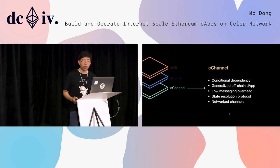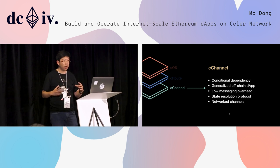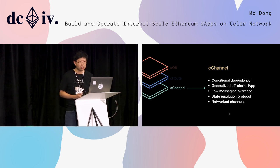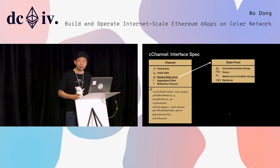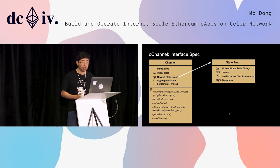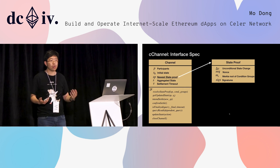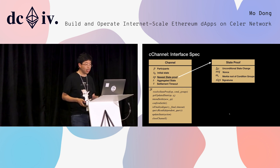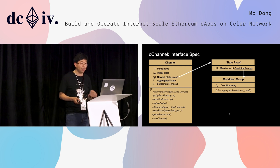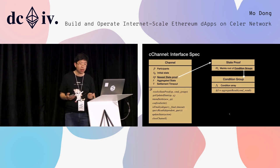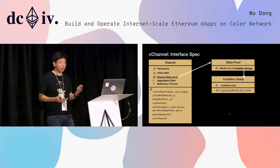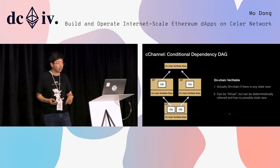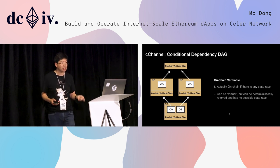cChannel is the lowest layer. What is cChannel? It's basically our generalized state channel construct. We came to this generalized state channel construct from the concept of conditional payment and conditional dependency. When you're writing a generalized state channel application, the first part is a smart contract — you need to implement certain functions and also have certain states in it. A key part here is that this construct enables generalized conditional state transitions: you can make your transition in your state channel conditionally depend on some other transitions in some other state channel.